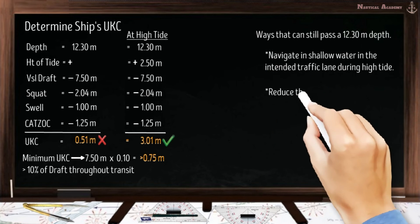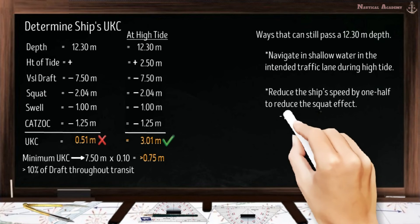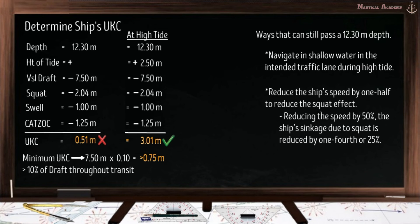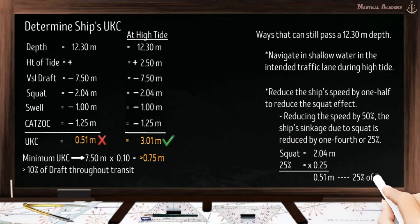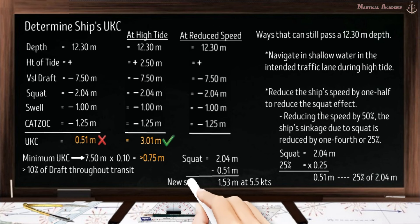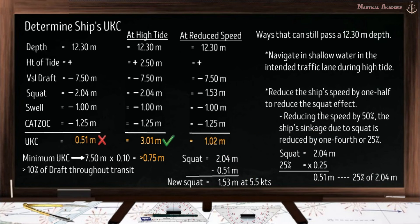The next option is to reduce the ship's speed by one half. Reducing speed by 50% reduces squat by one fourth (25%). 25% of 2.04 meters squat is 0.51 meter; subtracting this, the remaining squat is 1.53 meters. By reducing ship's speed to 5.5 knots, the new squat is 1.53 meters and the ship's UKC is 1.02 meters. In this method, we can pass the 12.3 meters depth sounding without waiting for high tide and without violating the minimum UKC company policy.